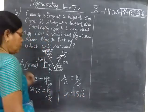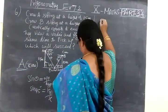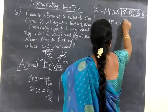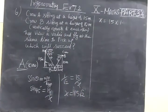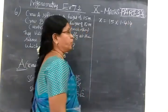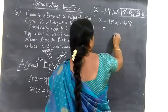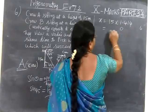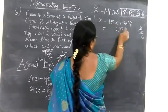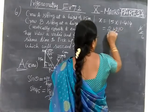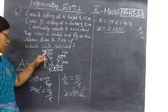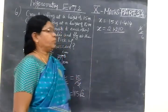S equals 15 into 1.414. Root 2 equals 1.414. So multiply: 15 fours is 60, balance 6. 15 into 1 is 15, then 21, balance 2. 15 fours is 60, 62, balance 6, then 15, 15 plus 6 is 21. After 2 digits we keep the point. So this is 21.21 meters. Crow A has to travel 21.21 meters.